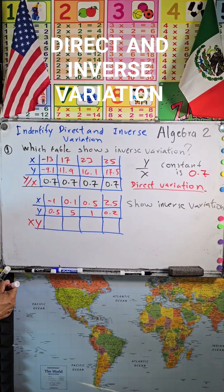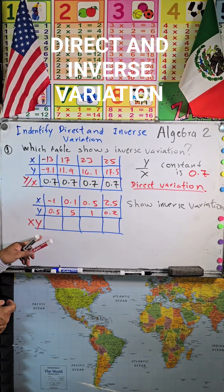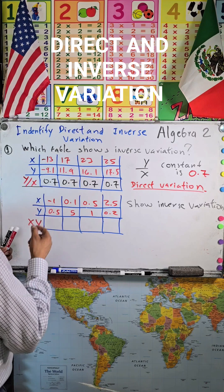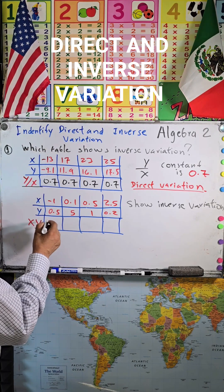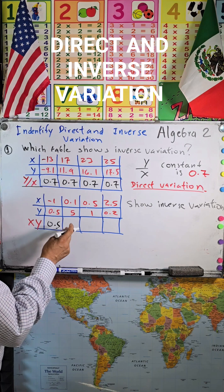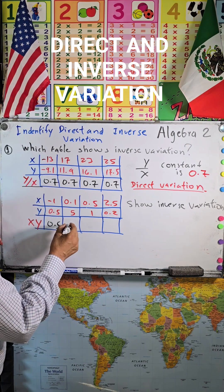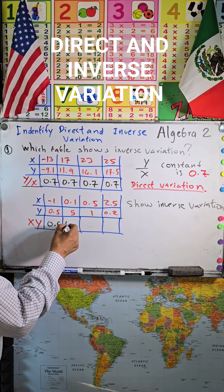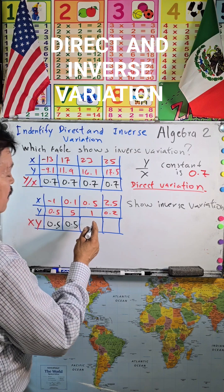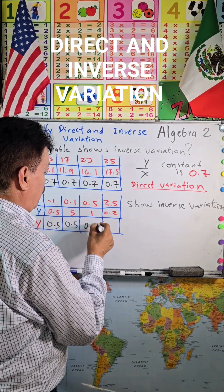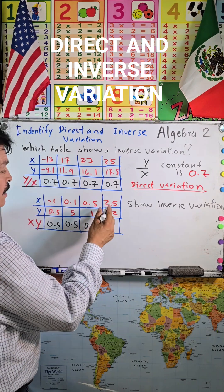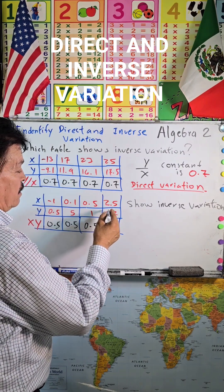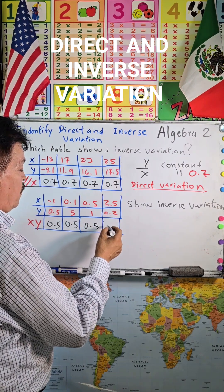So you multiply here. Look at this: negative one times 0.5, the answer is 0.5. Here, 0.1 times 5 is 0.5. Here, 0.5 times 1 is 0.5, right? This is also 0.5.